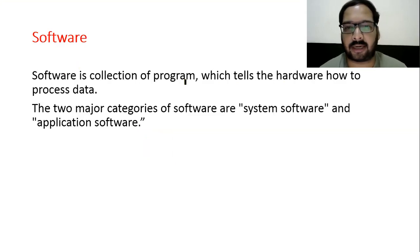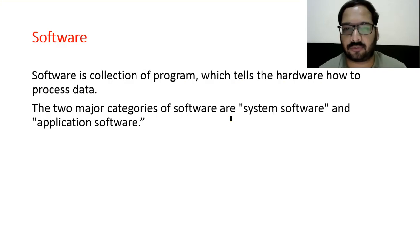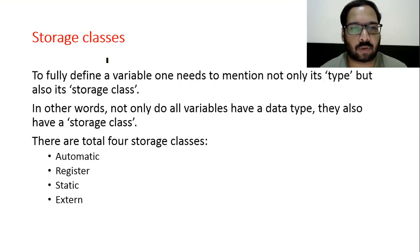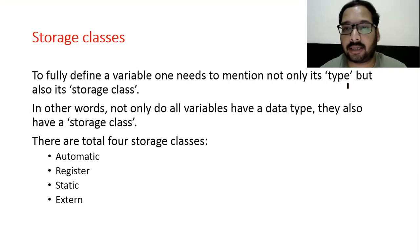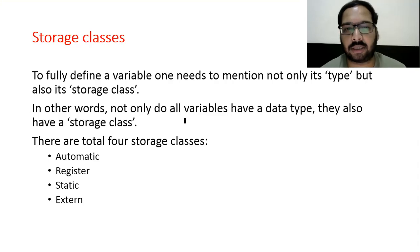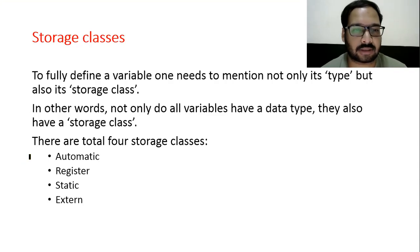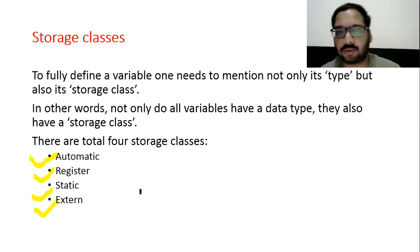Software is a collection of programs which tells the hardware how to process data. The two major categories of software are system software and application software. Storage classes: to fully define a variable, one needs to maintain not only its type but also its storage class — all variables have both a data type and a storage class. There are four storage classes: automatic, registered, static, and external.